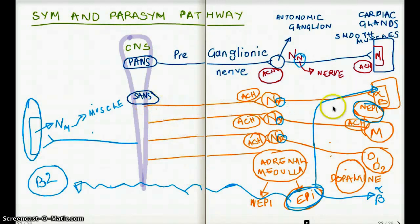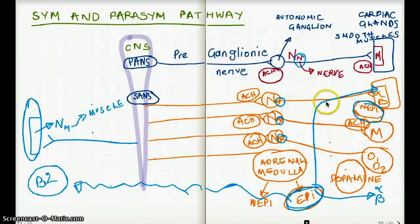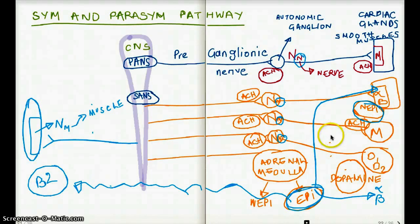We have our preganglionic nerve, which has the neurotransmitter acetylcholine, which is stimulating the nicotinic receptor — with a small n — because the nicotinic receptor is interacting with the nerve, which is the postganglionic nerve. The postganglionic nerve is then stimulating our alpha and beta receptors, but the neurotransmitter here is going to be norepinephrine.